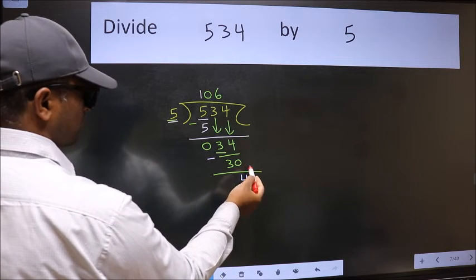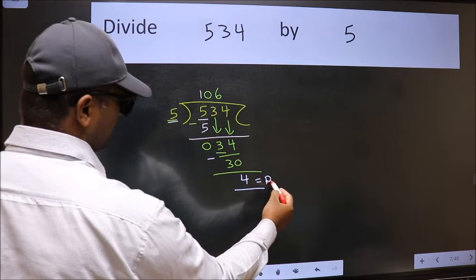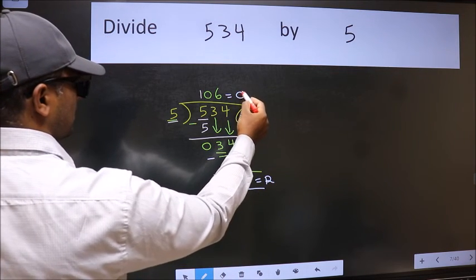No more numbers to bring it down, so we stop here. This is our remainder and this is our quotient.